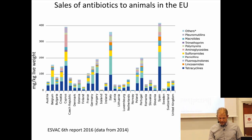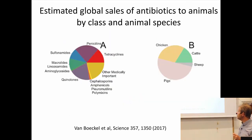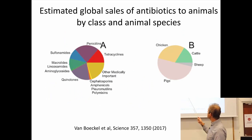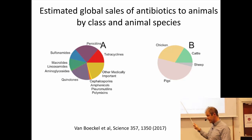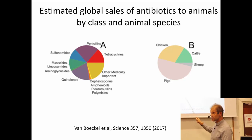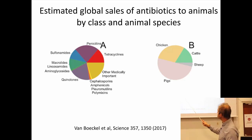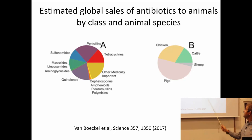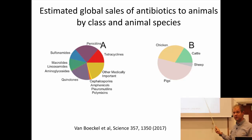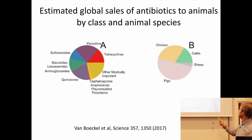Looking at global sales of antibiotics to animals, several classes are approximately equally large. Quinolones are pretty big, which is a bit scary because these are broad-spectrum antibiotics known to drive resistance. Tetracyclines, penicillins, sulfonamides — mostly those that are cheap and inexpensive to buy are used the most, with less use of more expensive ones like cephalosporins and polymyxins. Looking at different types of animals, pigs dominate — they use about half of the antibiotics given to animals, followed by chicken, cattle, and sheep.